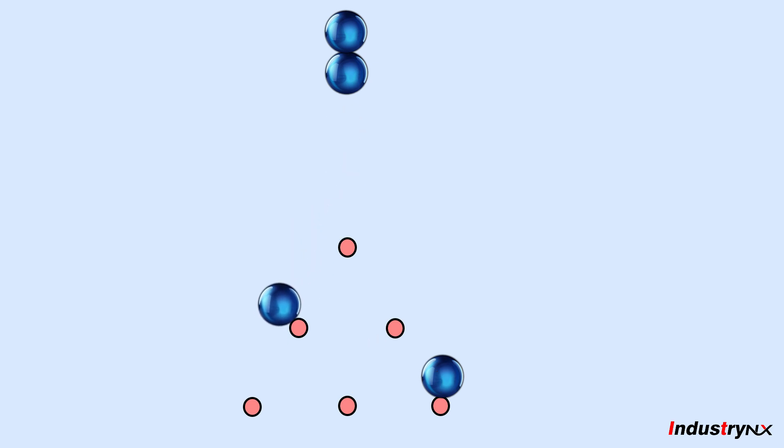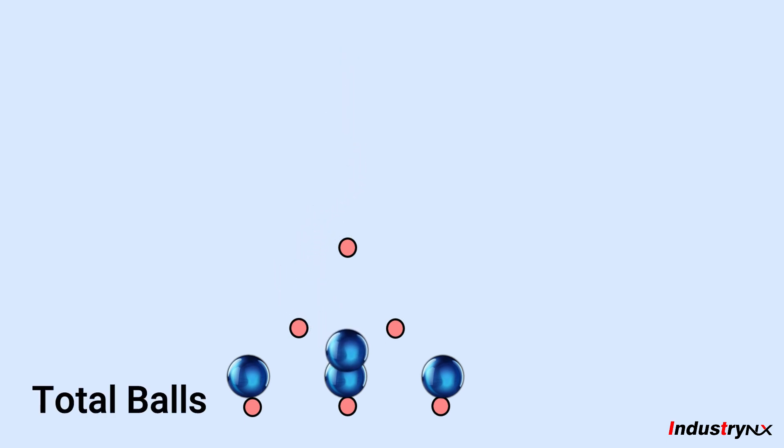As explained earlier, each peg will allow balls to bounce either side with 50% probability. This means 2 out of 4 balls will bounce on left and right hand side. Therefore, the 3rd row will receive 1, 2 and 1 balls as shown.